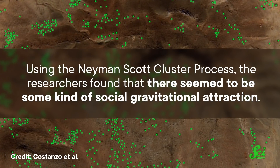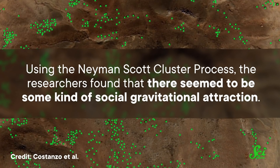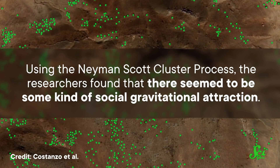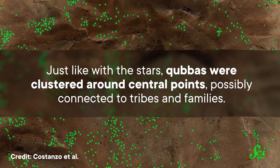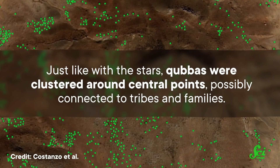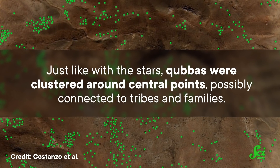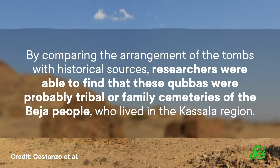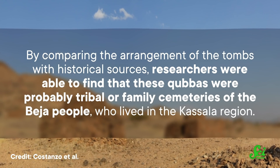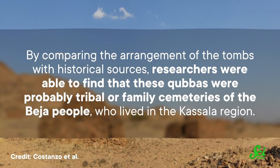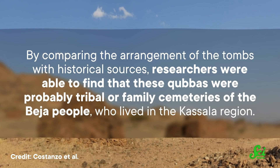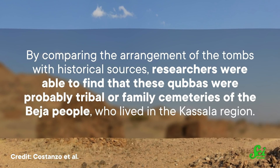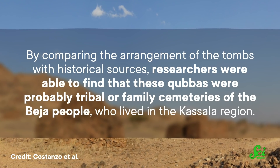Using the Neyman-Scott cluster process, the researchers found that there seemed to be some kind of social gravitational attraction. Just like with the stars, kubas were clustered around central points, possibly connected to tribes and families. These kubas also tended to cluster around the much older tumuli, for reasons that are yet unknown. By comparing the arrangement of the tombs with historical sources, researchers were able to find that these kubas were probably tribal or family cemeteries of the Beja people who lived in the Kassala region.